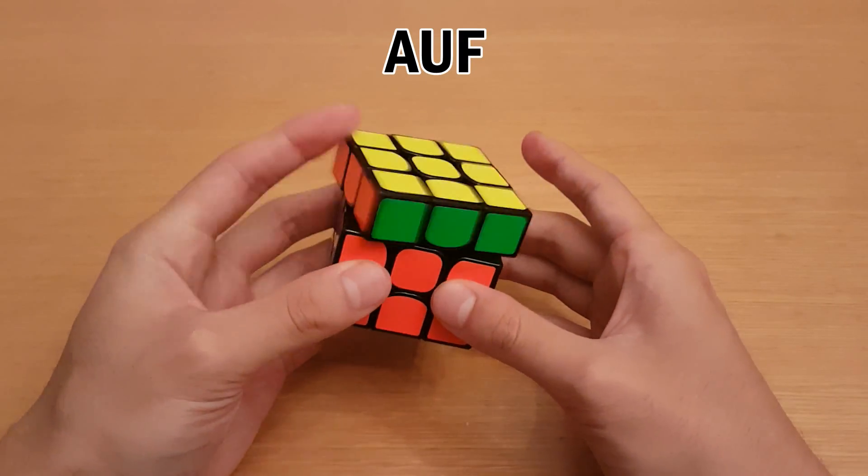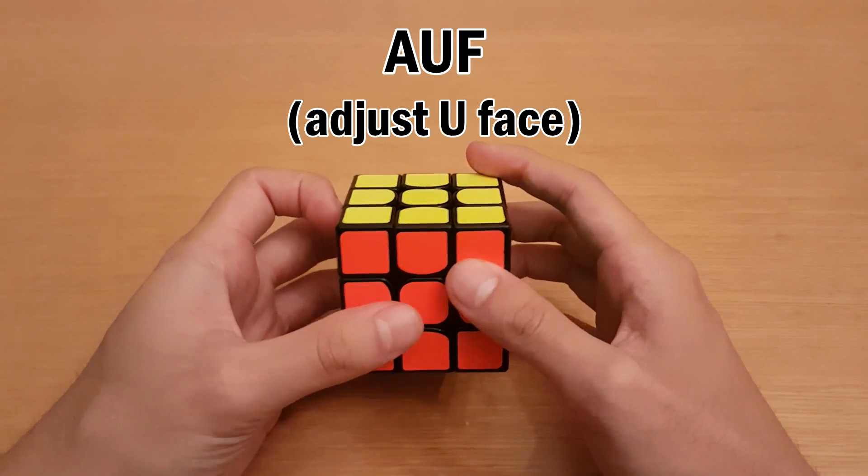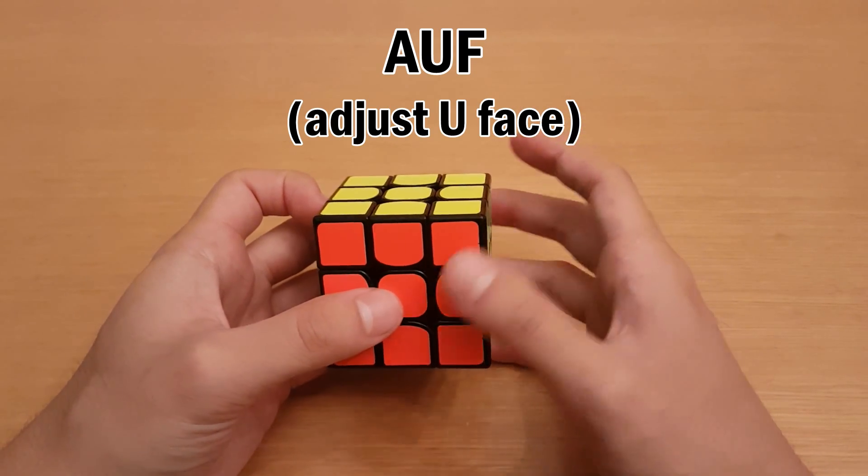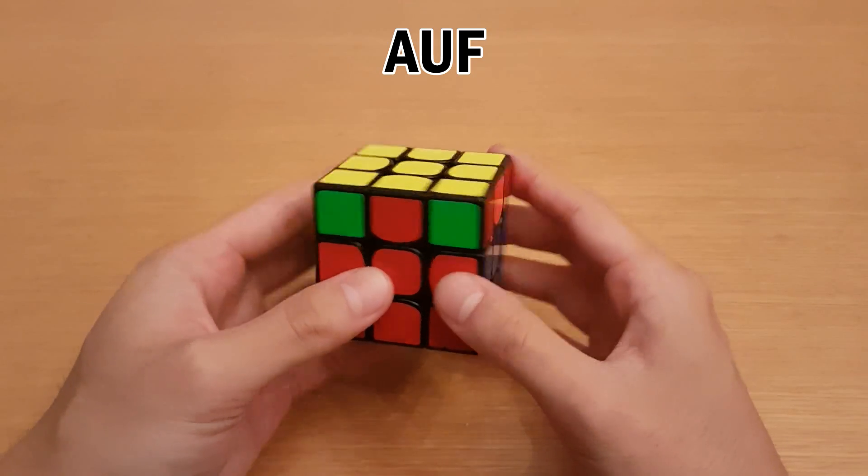Now it's also really important to be able to do this so that you can do AUF, or adjust U-face at the end, which is when you finish doing your PLL and then you need to adjust the U-layer in order to finish the solve. So here's an example.